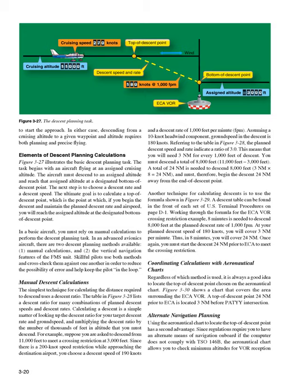Elements of descent planning calculations: the task begins with an aircraft flying at an assigned cruising altitude. The aircraft must descend to an assigned altitude and reach that assigned altitude at a designated bottom-of-descent point. The next step is to choose a descent rate and a descent speed. The ultimate goal is to calculate a top-of-descent point — which is the point at which, if you begin the descent and maintain the planned descent rate and airspeed, you will reach the assigned altitude at the designated bottom-of-descent point. In an advanced avionics aircraft, there are two descent planning methods available: one, manual calculations, and two, the vertical navigation features of the FMS unit.